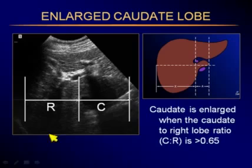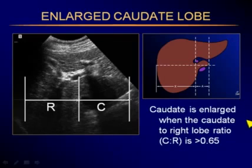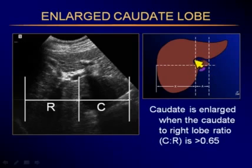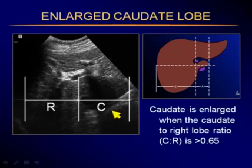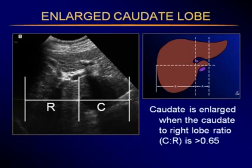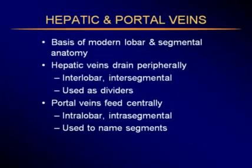The caudate lobe can also become enlarged, especially with cirrhosis. We can measure this: take a transverse section of the liver, measure the width of the caudate lobe from its medial margin to the lateral margin of the portal vein, and the rest is the width of the right lobe. Take the ratio of caudate to right lobe. If the ratio is over 0.65, that's an enlarged caudate. If it's over 0.73, that is very specific for cirrhosis — though easier to measure on CT.